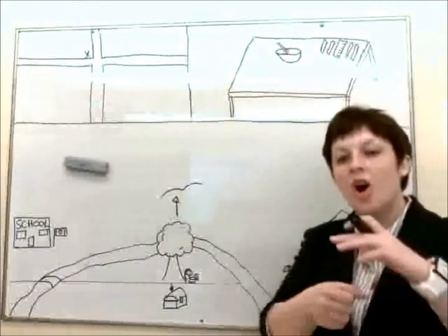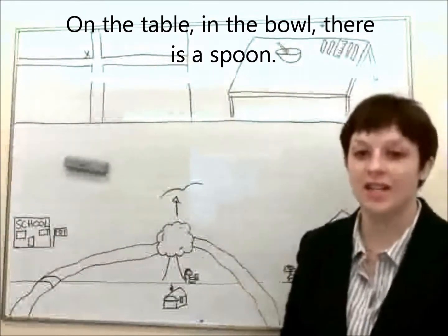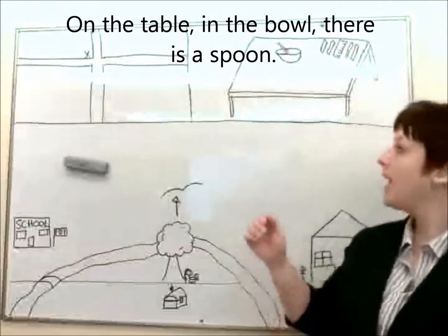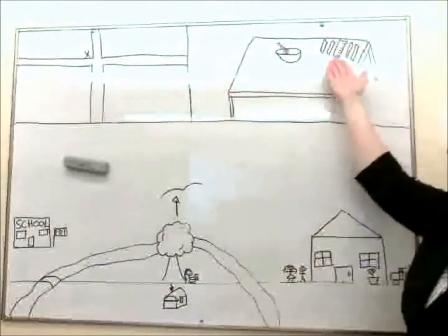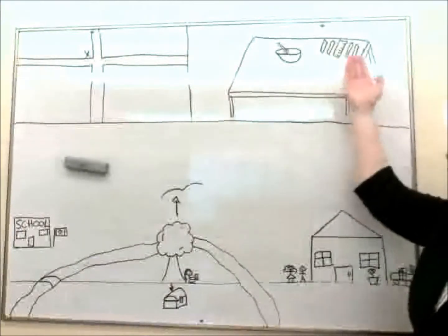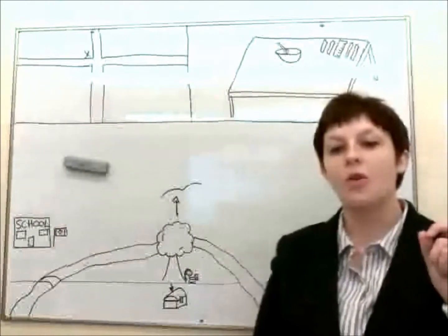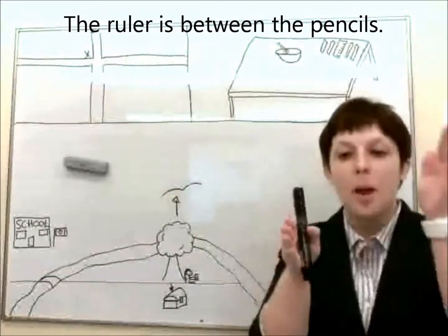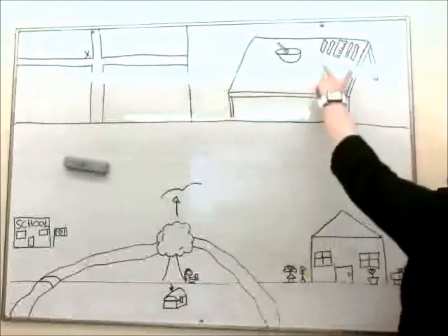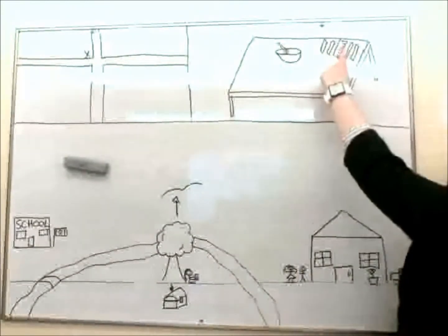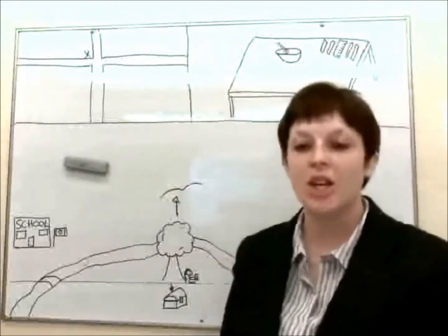So on the table, in the bowl, there is a spoon. And now, beside this, we see some pencils and a ruler. So we can say that the ruler is between the pencils. Here are the pencils, and here, between them, is the ruler.